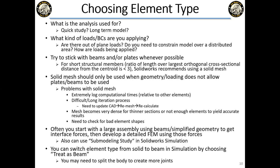If you have one element through the thickness of a member under bending, with tension on top and compression on bottom, the element averages those stresses — and the average through a neutral axis is zero. So the element reports zero stress. You need to break that into at least two elements through the thickness so each element captures either the tension or compression side, not both.